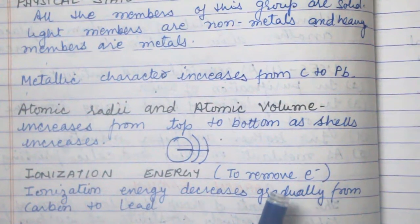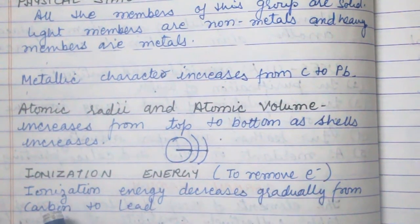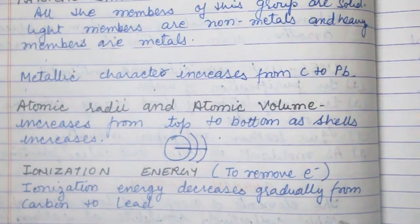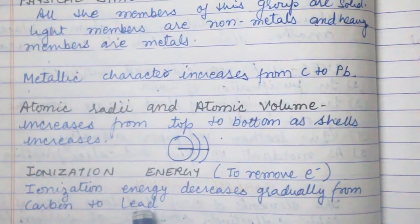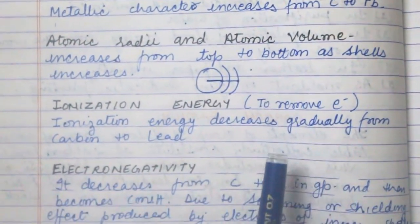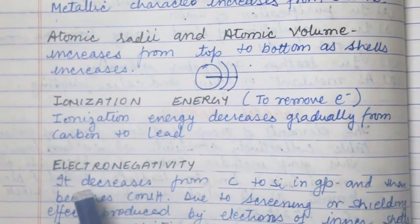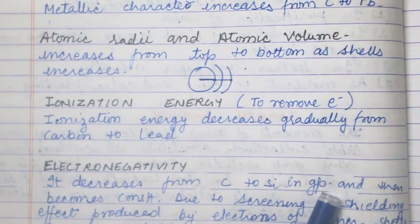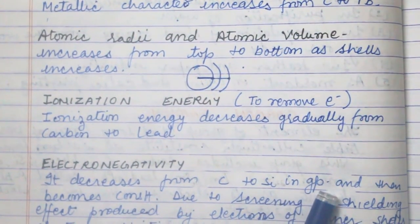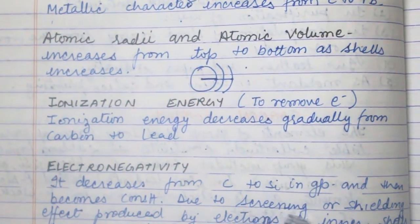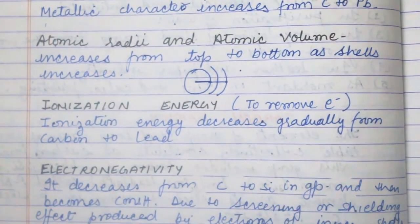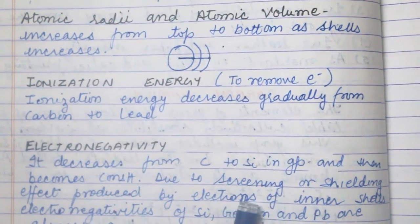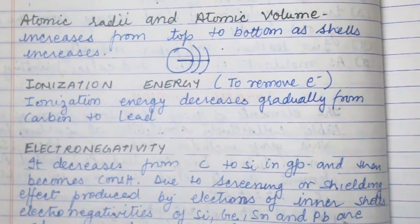Ionization energy is the energy required to remove an electron from the outermost shell. Ionization energy decreases gradually from carbon to lead. Electronegativity also decreases from carbon to silicon going down the group, and then becomes almost constant due to the screening or shielding effect produced by inner electrons.